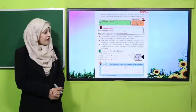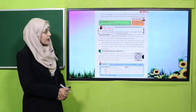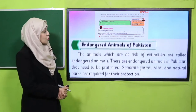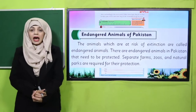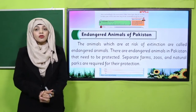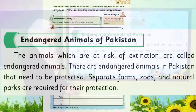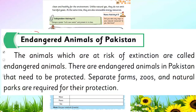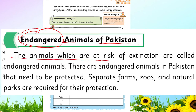I hope everybody has opened page number 31 in their books. My dear students, today we will discuss about endangered animals. Put your fingers where I will read. Endangered animals of Pakistan — Pakistan ke wo janvar jo khatre mein hain. The animals which are at risk of extinction are called endangered animals.